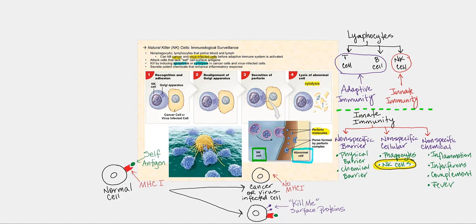The next nonspecific cellular defense that's part of our innate immunity are NK cells. To recap, we have three types of lymphocytes: T lymphocytes or T cells, B cells or B lymphocytes, and the natural killer cells or NK cells. The B and T lymphocytes are part of adaptive immunity, while NK cells are part of innate immunity.